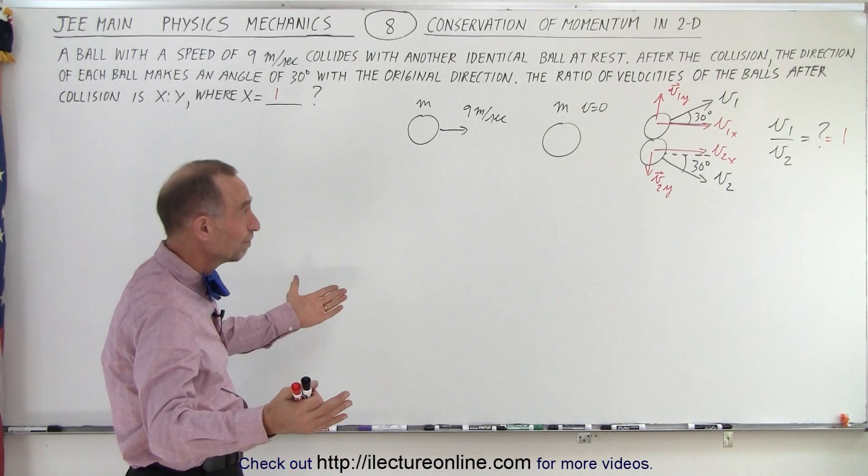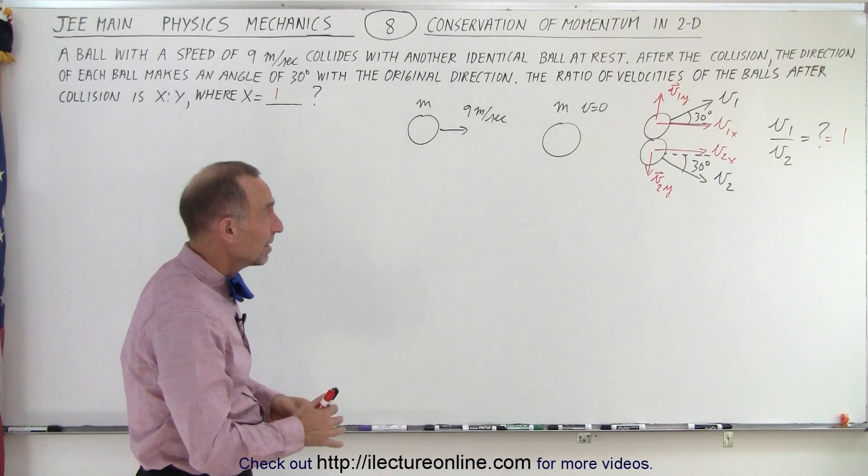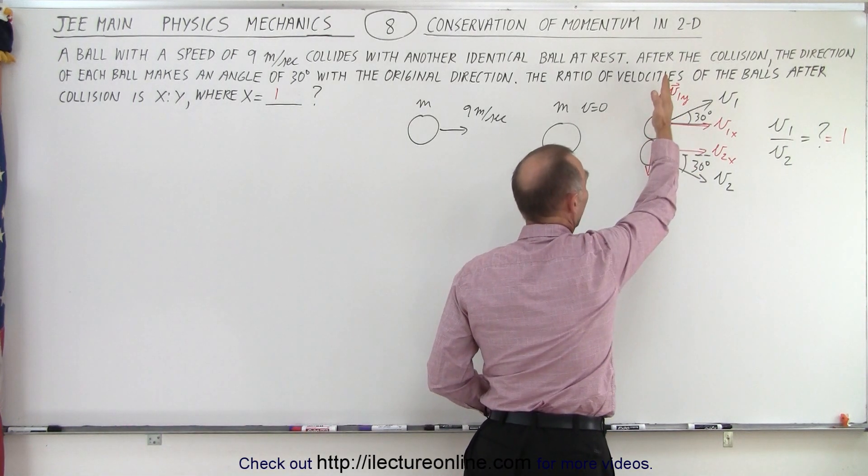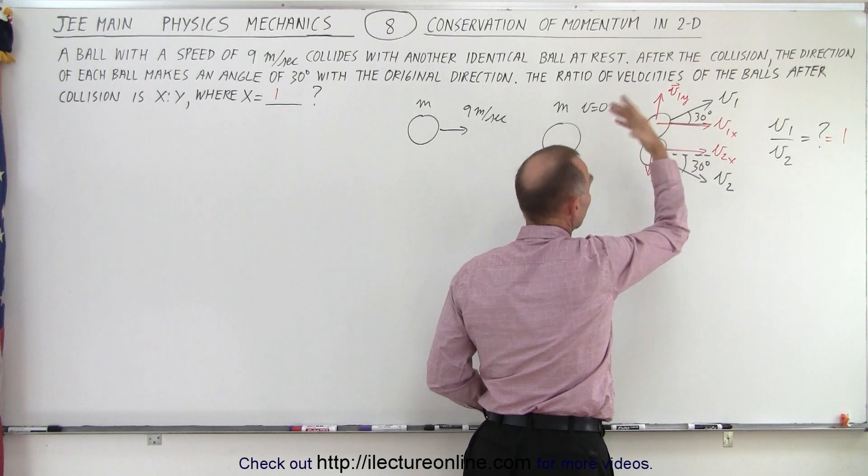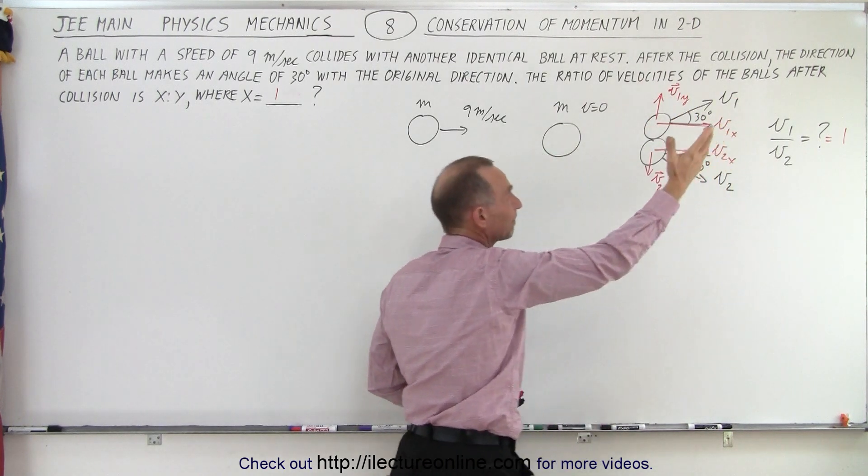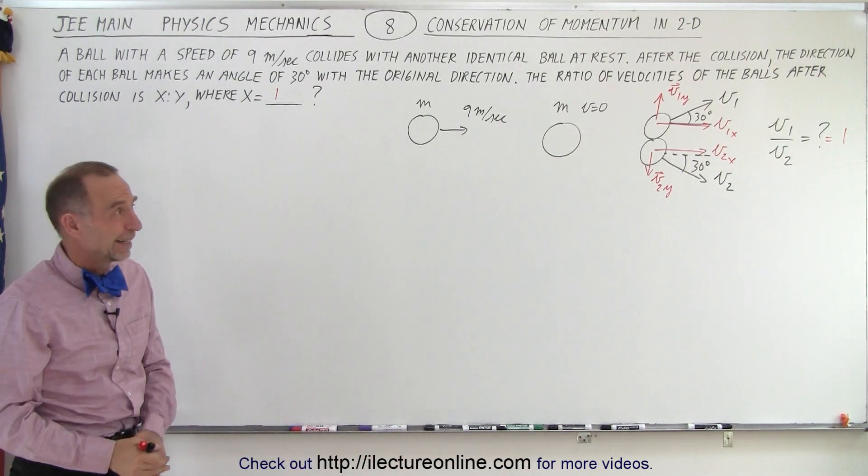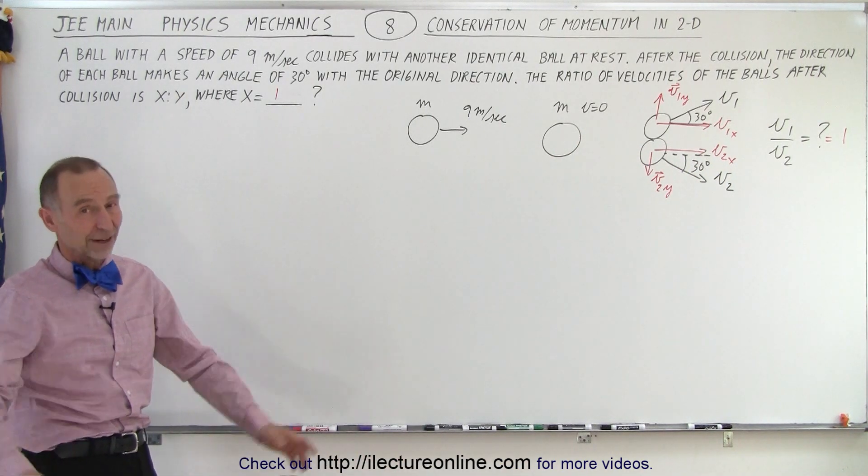So at this point, because of the conservation of momentum, I would say since they both have the same angle, they have the same mass, the upward and downward velocity magnitudes must be the same, therefore these must be the same, therefore the ratio of the velocities after collision is one to one and that's the answer I think they're asking for.